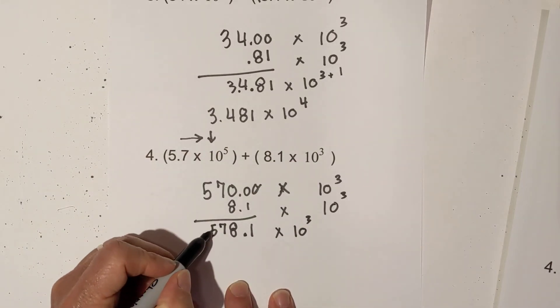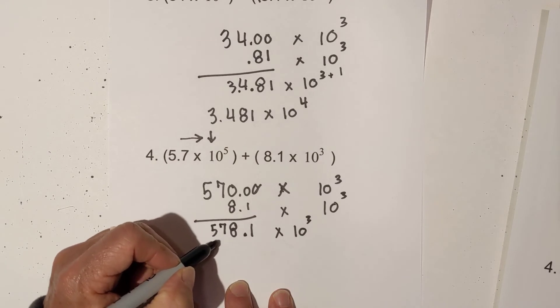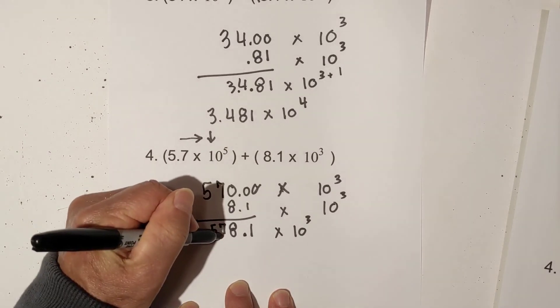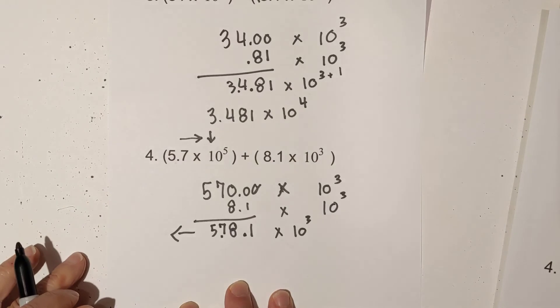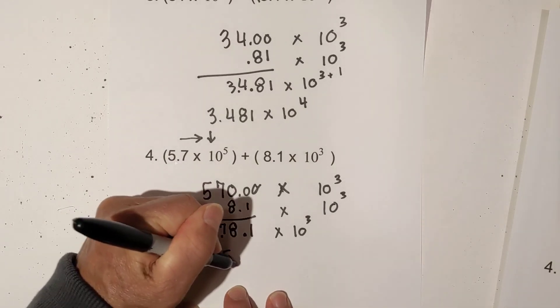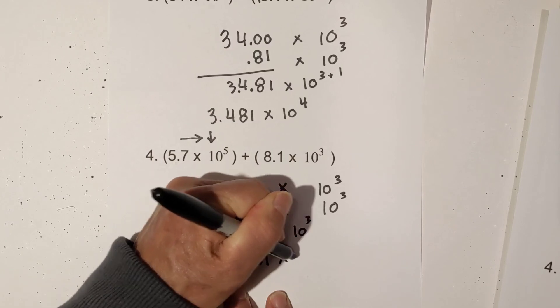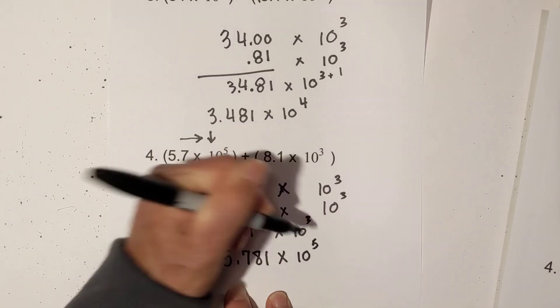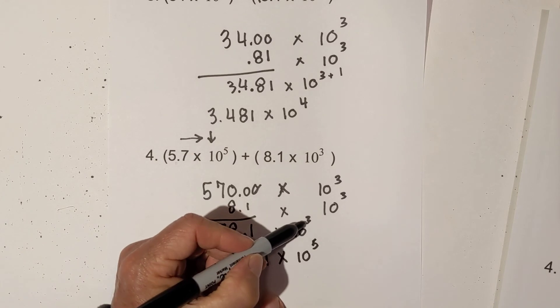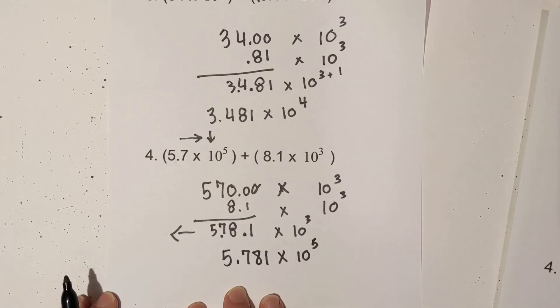Now remember, this number is not between 0 and 10. So I need to move the decimal two places to the left, which means the exponent will get larger. So that becomes 5.781 times 10 to the fifth, because I moved the decimal two places to the left, which means the three will add two to that.